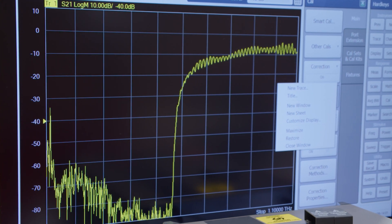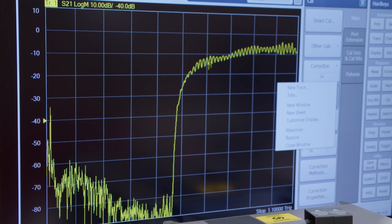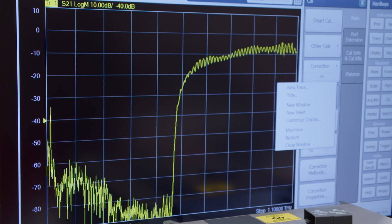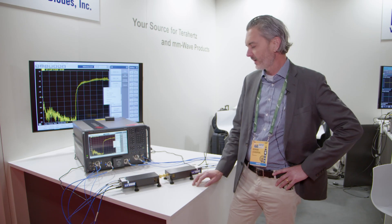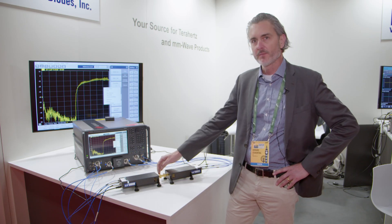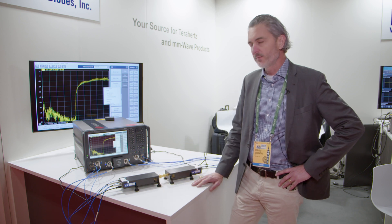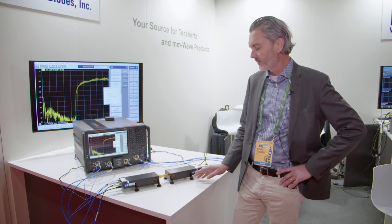Some of the attributes of these frequency extension modules at WR1 is 80 dBs of dynamic range and minus 23 dBm of test port power, the most test port power that you'll get between these frequencies.